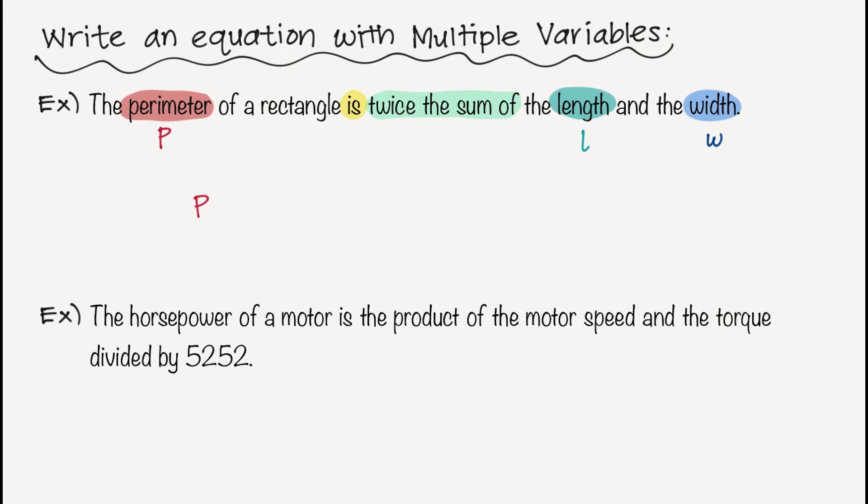So let's translate this now. p equals twice the sum of, so two times. And what are the two things that I'm adding? It is the length, l, and the width, w. And there we go. So I wrote my equation. I have three different variables there. Let's look at our next one.